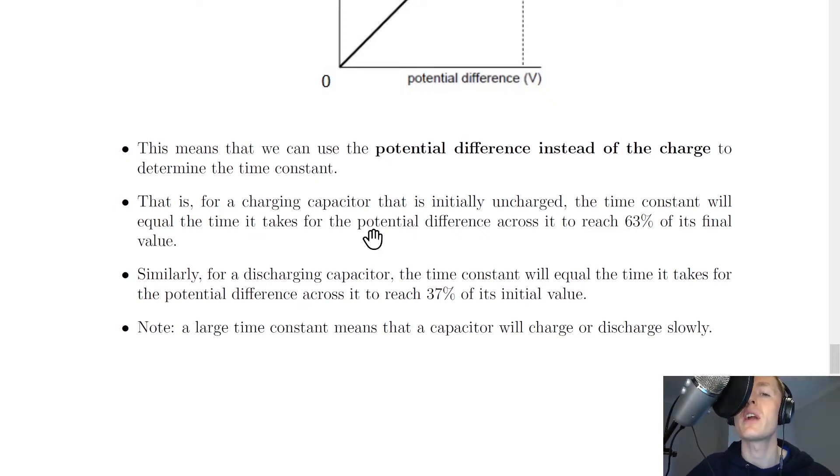For a graph of potential difference against time, for a charging capacitor that is initially uncharged, the time constant will equal the time it takes for the potential difference across it to reach 63% of its final value.